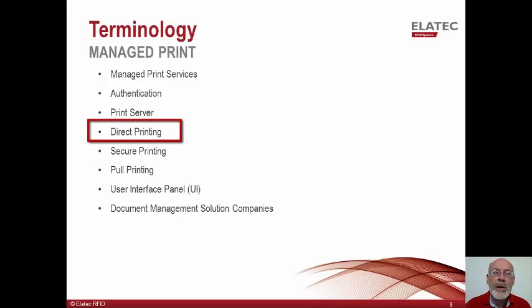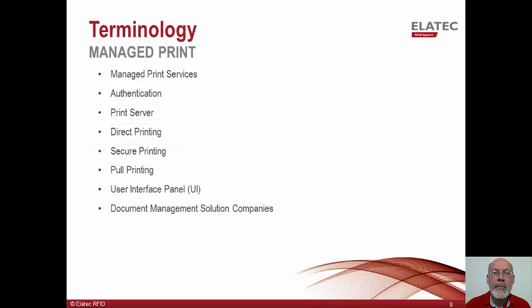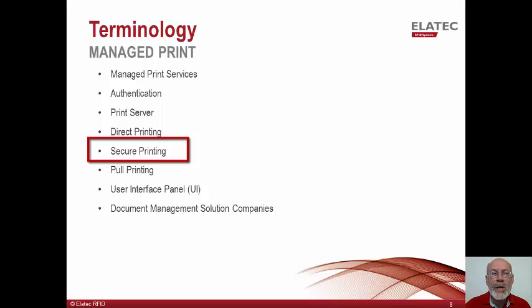Direct printing is the process most of us are familiar with, where a print job goes directly from the user's desktop to the printer. This is easy to visualize when a personal printer is connected directly to the desktop, but the same work process can operate over the network, where jobs go directly from client to the printer. Secure printing is an often-used term applied whenever controls are added to printing. It most often applies to the process where print jobs are sent directly to the target printer, where they are held until they are released by a user. The jobs can be released by a proximity card, PIN, or other methods of logging on. This method typically does not require the use of a managed print server.